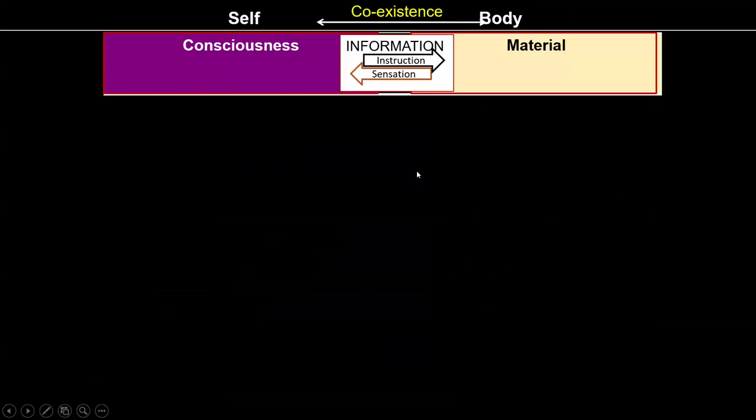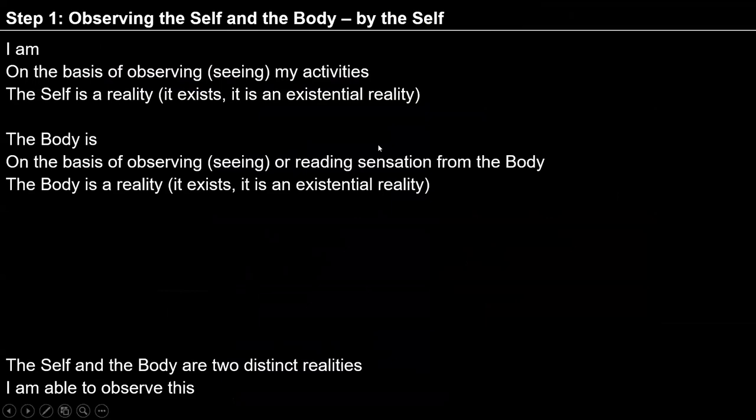To observe it, Step 1 is: observing the self and the body by the self. In Step 1, we can say: I exist, the body exists. How can I say that I exist? Because I can observe my activities directly. For example, desire, thought, and expectations are going on in me and we can see them directly. On the basis of this direct observation, we can see that I exist — self is a reality, I am a reality, and it exists.